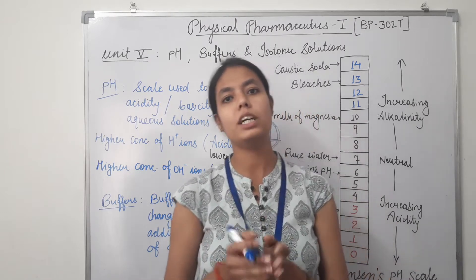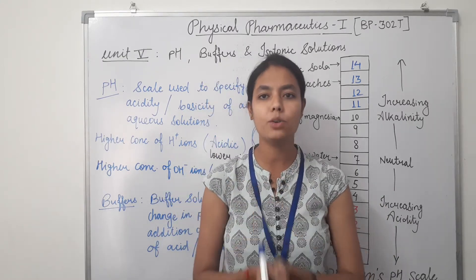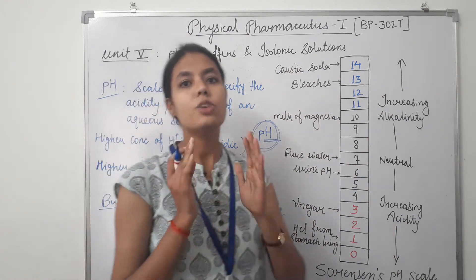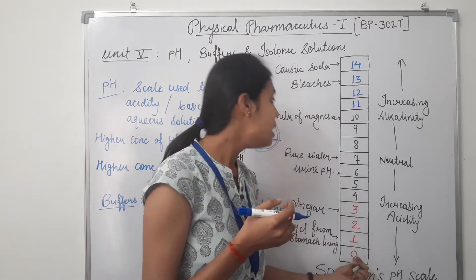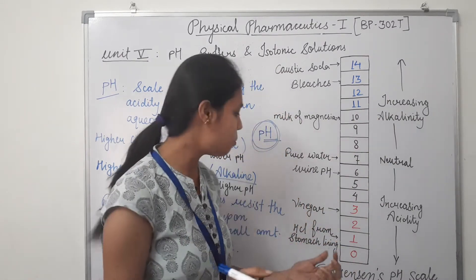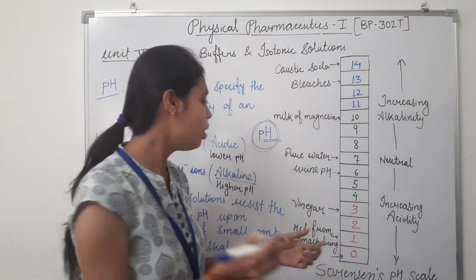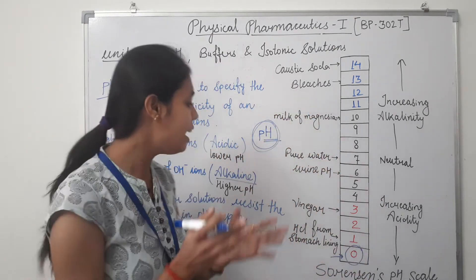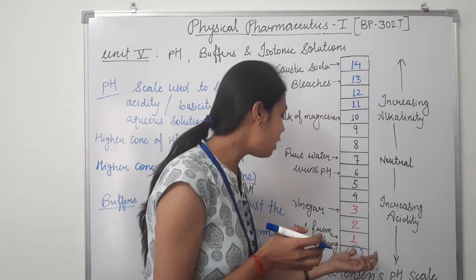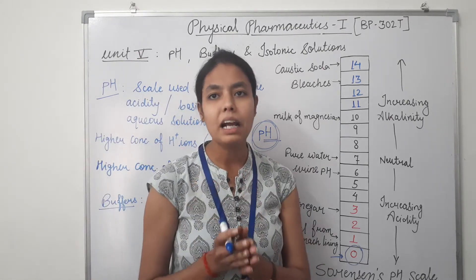pH is a way to measure the hydrogen ion concentration in a solution — how many hydrogen ions are present in a given liter of solution. Sorensen's scale assigns a pH value from 0 to 14. The value 0 denotes the pH of battery acid. The lower number, 1, denotes the pH of hydrochloric acid from the stomach lining. The pH scale works in powers of 10, so each jump in number is a multiple of 10 in concentration.